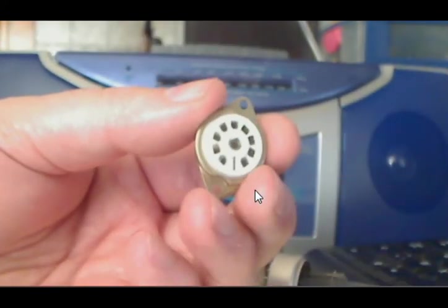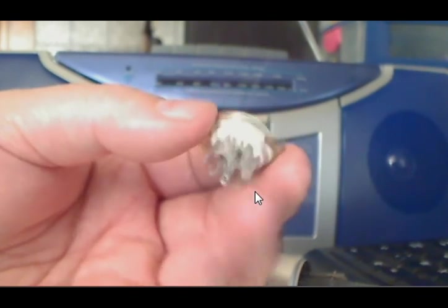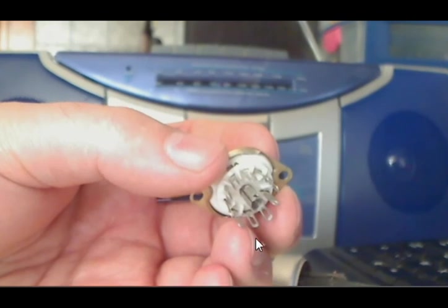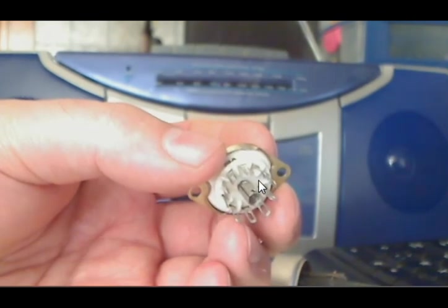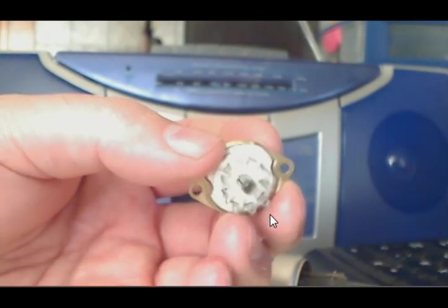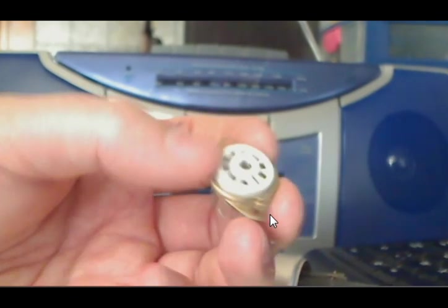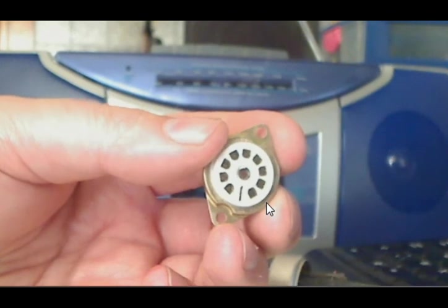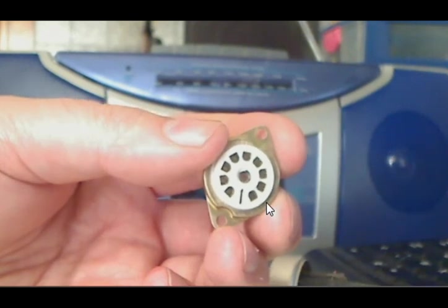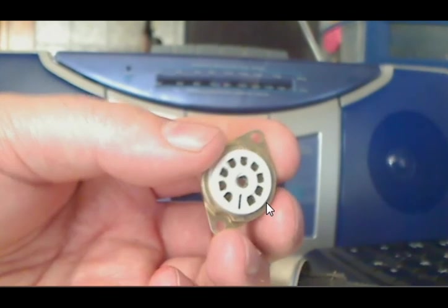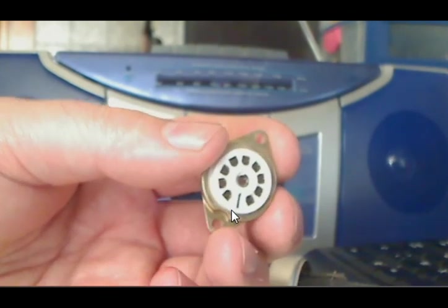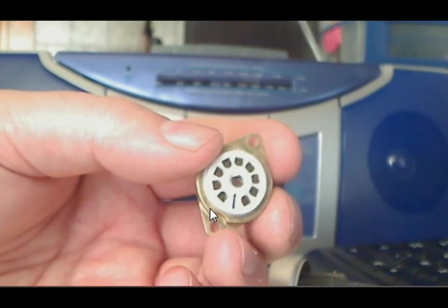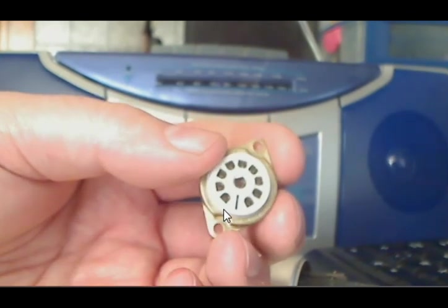This is a socket for the ECC88 tube. At the bottom we see the solder lugs where we can connect the wires to. We still use the 6.3 volt heater voltage because at the time they used the car battery's voltage to connect to the heater.